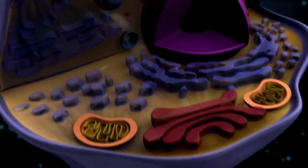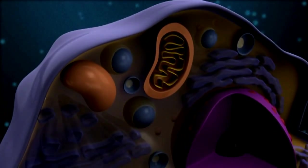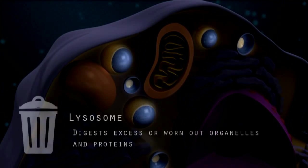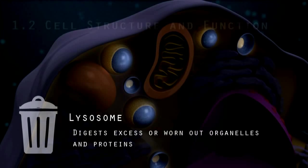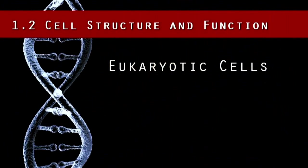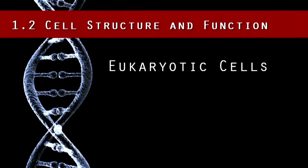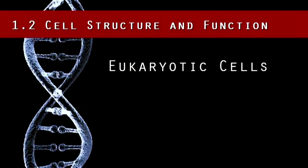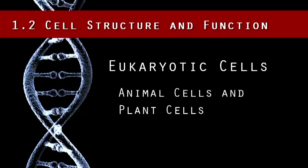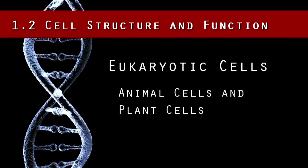The lysosome is the trash man of the cell because it digests excess or worn-out organelles and proteins by breaking them down and removing them. There are actually two types of eukaryotic cells: animal cells and plant cells.